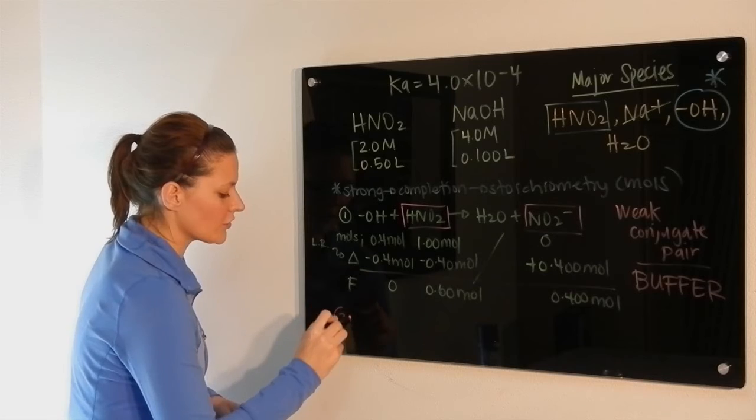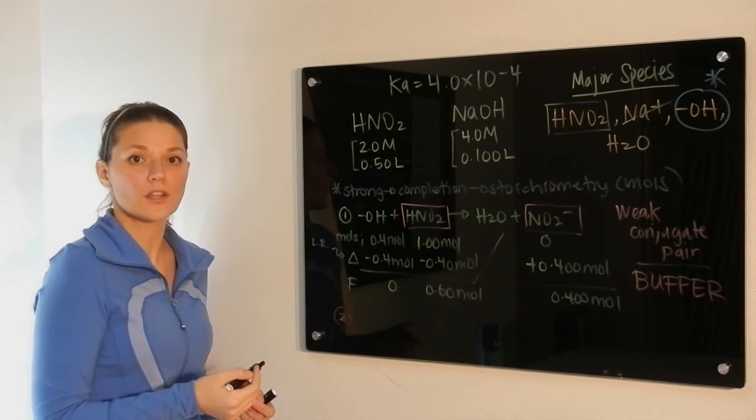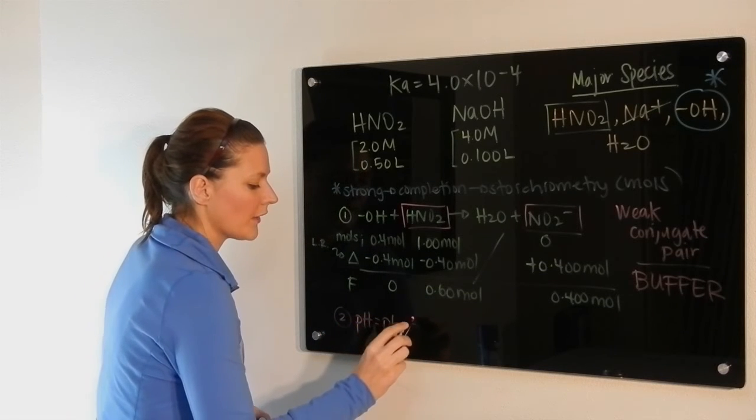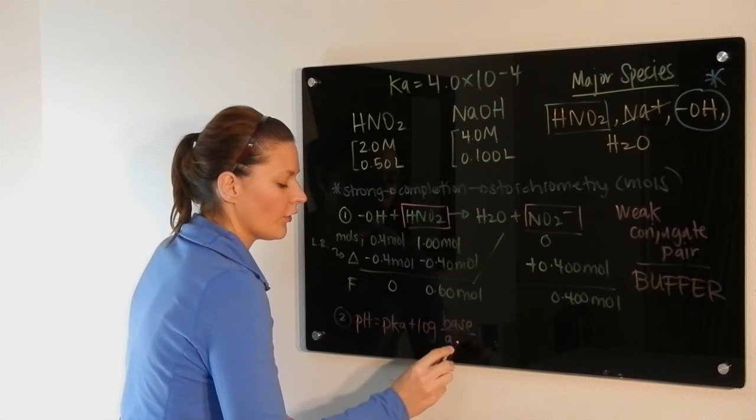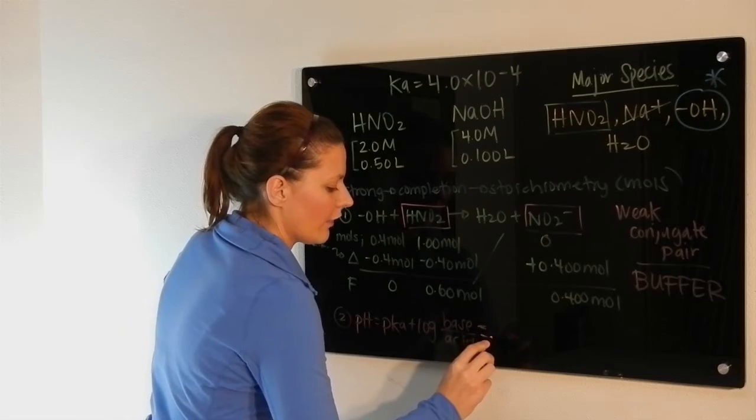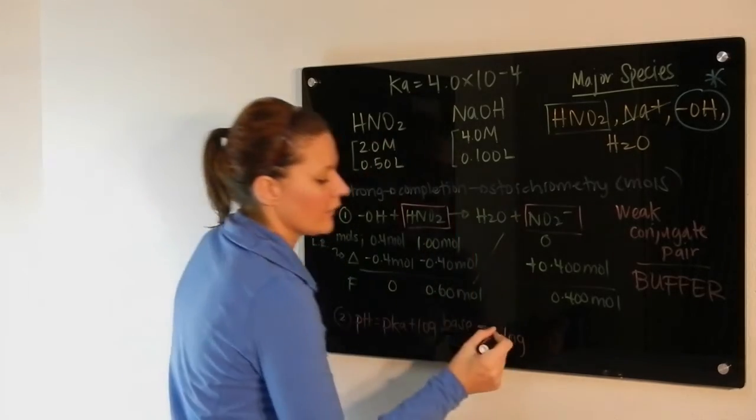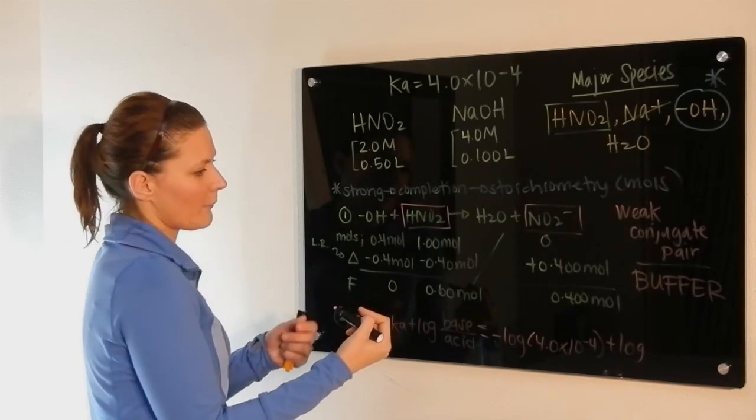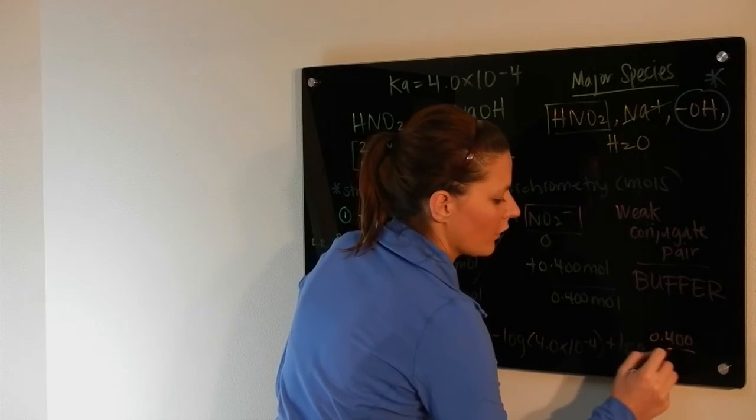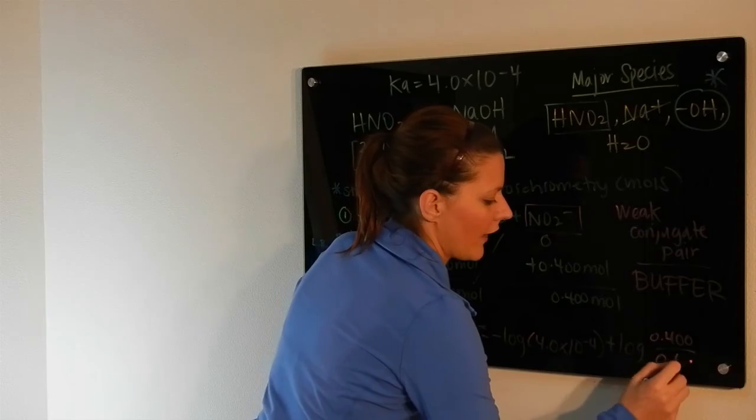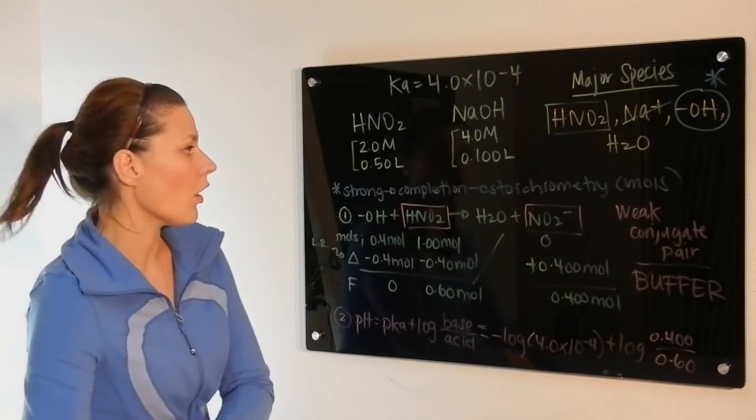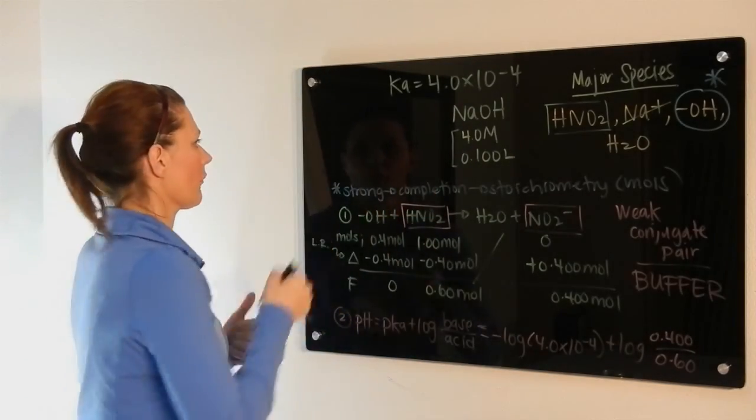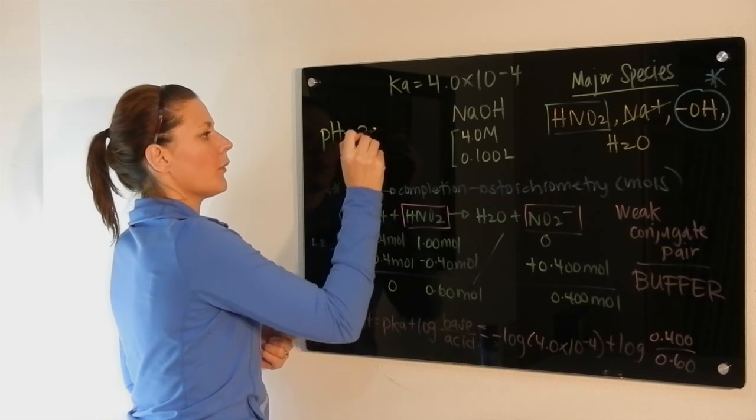So then our second step here would be to determine the pH. Because it's a buffer, you can use the Henderson-Hasselbalch equation, which is pH is equal to the pKa plus the log of the base over the acid, which would be the negative log of the Ka provided, 4.0 times 10 to the minus 4, plus the log of your concentration of base or amount of base, 0.4, over 0.6, the amount of acid. When you do that and solve, you wind up getting a pH equal to 3.22.